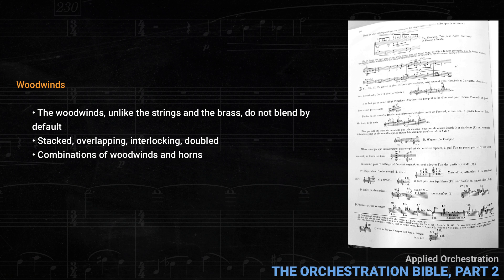Koechlin includes combinations of woodwinds and horns, since horns blend better with woodwinds than the heavy brass do. For example, he mentions that the combination of horn with flute at the unison is pretty useless, since the flute is very weak in the register it shares with the horns. In a soft dynamic, however, if the horn is muted or stopped, this combination can occasionally be useful. There are even examples of woodwinds combined with saxophones.